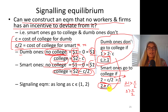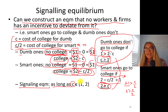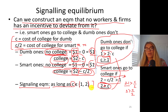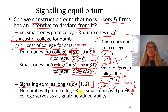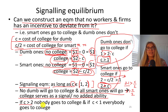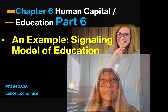Putting these two conditions together, the signaling separating equilibrium says that as long as the cost of college is strictly between 1 and 2 units, no not-so-smart workers will go to college and all smart ones will go. College serves as a signal but does not add to ability. If C is greater than 2, nobody will go to college. If C is less than 1, everybody will go to college, and college won't serve as a signaling equilibrium.